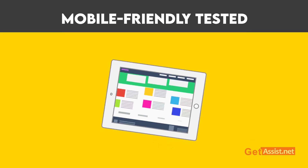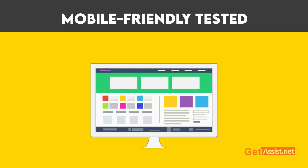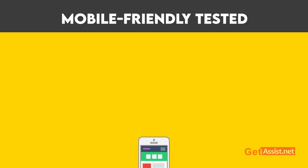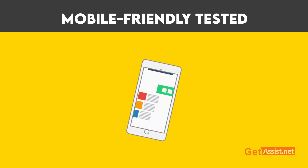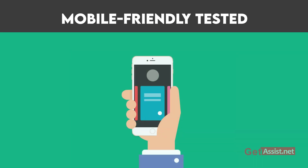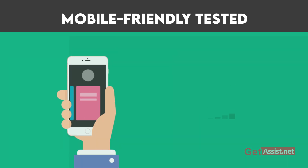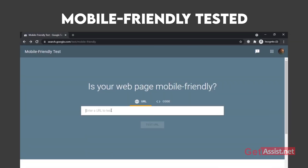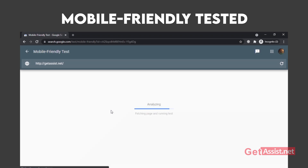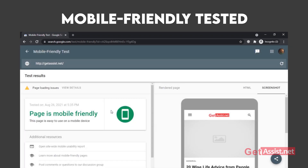It was in 2015 when Google announced that mobile-friendly compliance would be a ranking signal for searches done through mobile devices. Google is also prioritizing mobile-first indexing, so it is important that your website is mobile-friendly to get higher ranks in 2021. You can run your website or an individual URL through Google's Mobile-Friendly Testing Tool to find errors and then fix them.